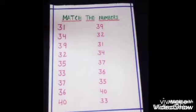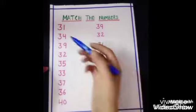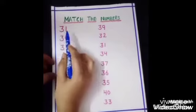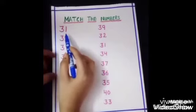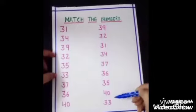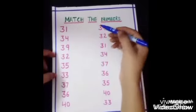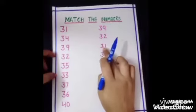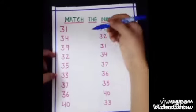See students, first number is 31, 31. We have 31 number in second line also. Where is number 31? Yes, this is 31, 31. So match it.